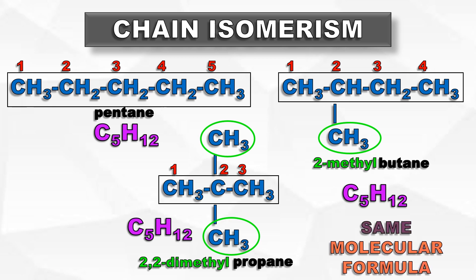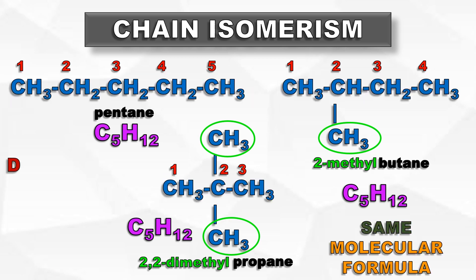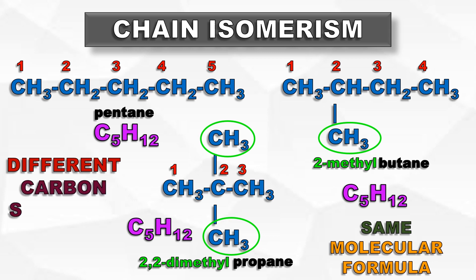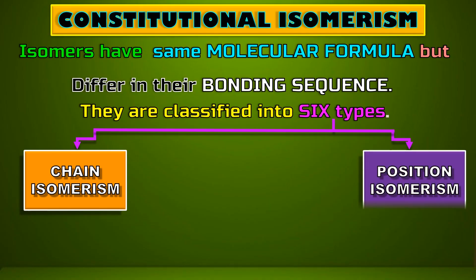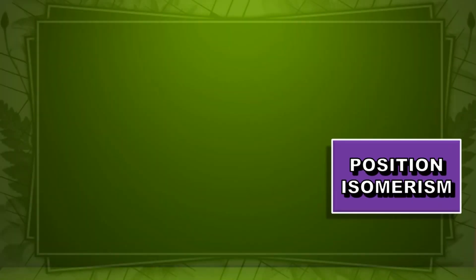The first one is pentane, the second one is butane, and the third one is propane. So that is chain isomerism. The next one is position isomerism.